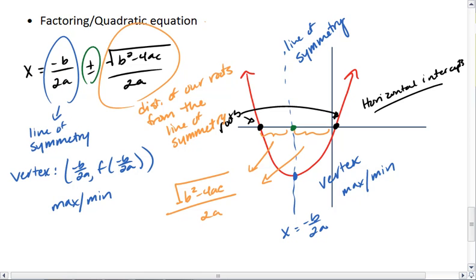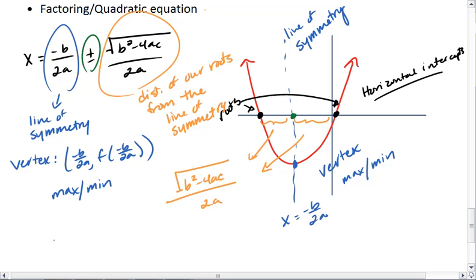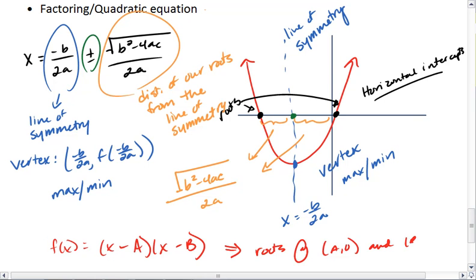We have already seen how a factored form, so if we were to factor it into x minus a, x minus b, that this quadratic then has roots at a zero and b zero. And that's how the factoring ties in with our graph.